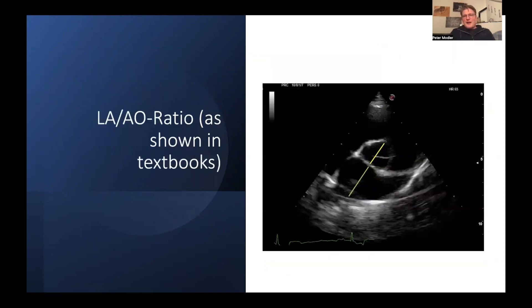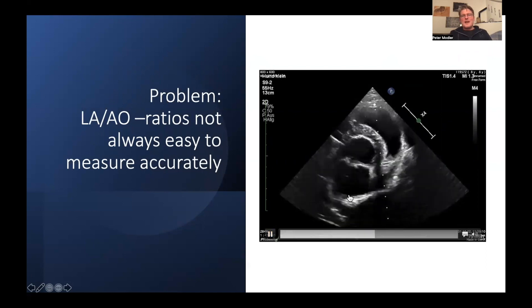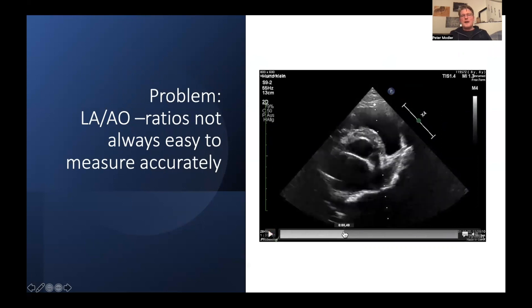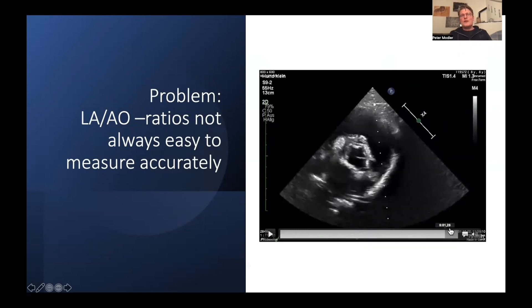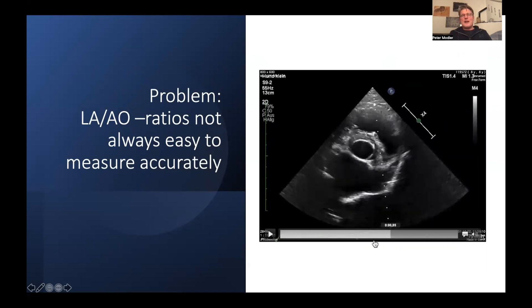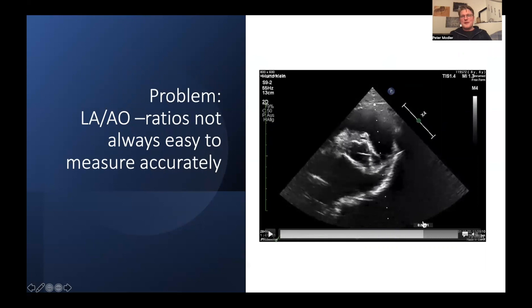If you look it up in textbooks, you will very likely find the short-axis LA:Ao ratio, where you compare the left atrial diameter to the diameter of the aortic root. Unfortunately, a view like this is not always very easy to get, so in some dogs you might get images where it will be hard to find the frame where you can really reliably assess the LA:Ao ratio correctly. This kind of view can sometimes be very challenging to get.